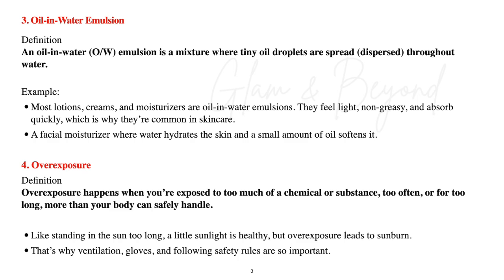A facial moisturizer where water hydrates the skin and a small amount of oil softens it is a great example. Number four: overexposure. Overexposure happens when you're exposed to too much of a chemical or substance too often or for too long — more than your body can safely handle. Like standing in the sun too long: a little sunlight is healthy, but overexposure leads to sunburn. That's why ventilation, gloves, and following safety rules are so important.